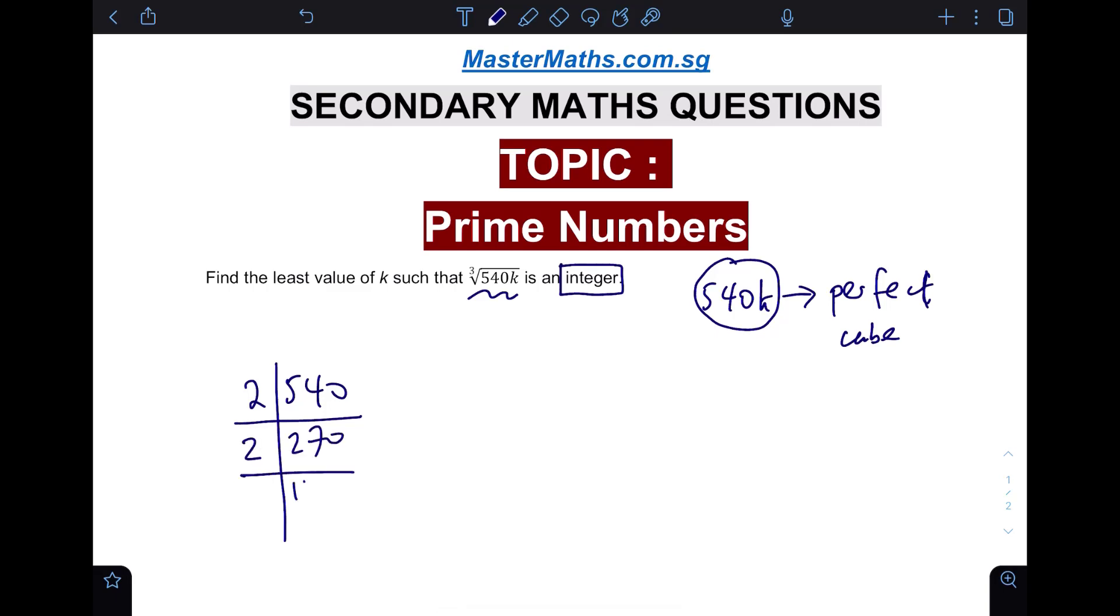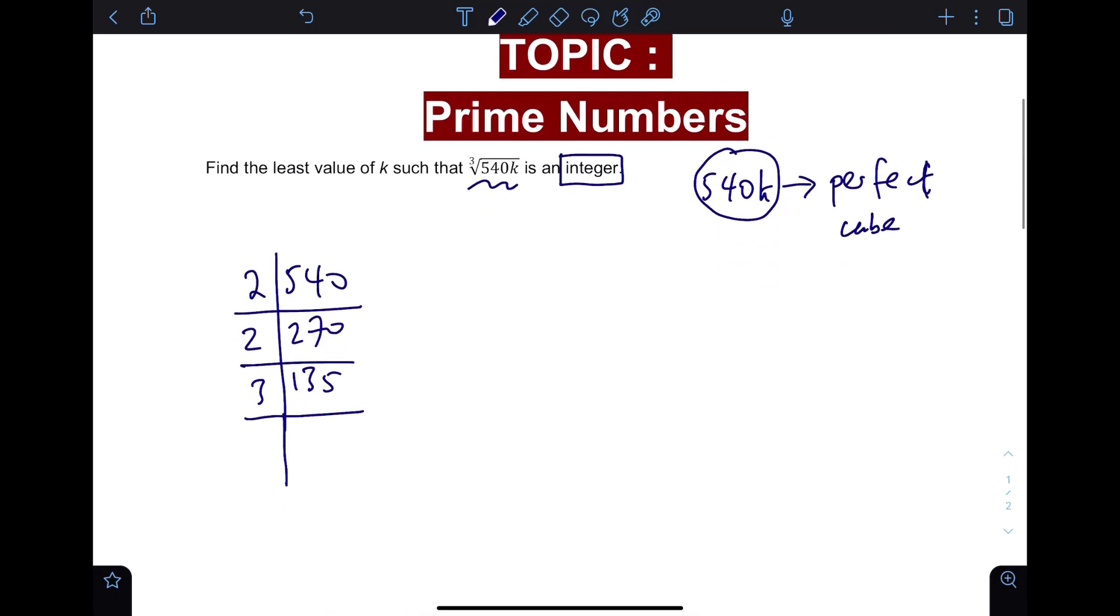You can further divide this by two as well to get 135. You cannot divide this by two anymore, so you can try dividing by the next prime number which is three. That is possible, so you have 45. Again you can divide this by three to get 15. Again you divide this by three you get five, and divide by five it's one at the end.